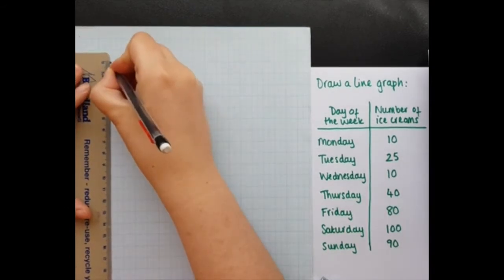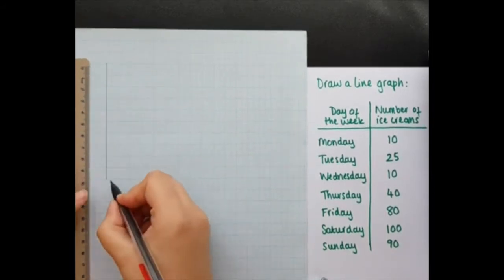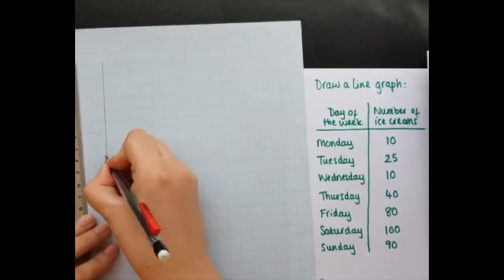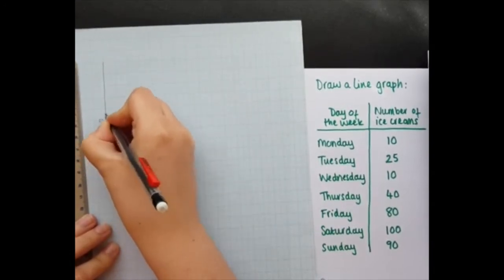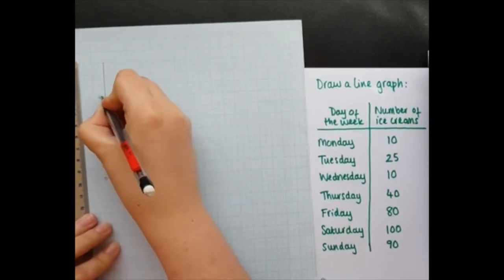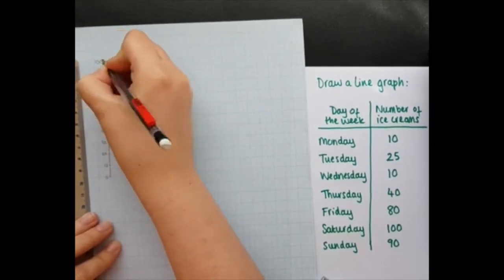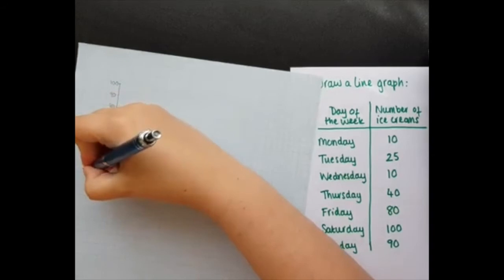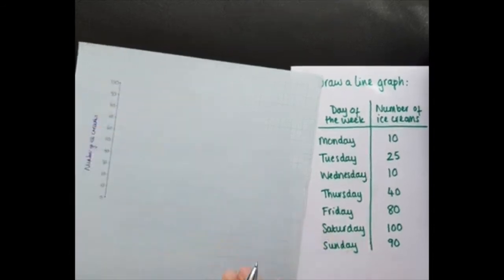So we're going to start up here and we're going to go down to 10 with each of these boxes being 10. So 0, 10, 20, 30, 40, 50, 60, 70, 80, 90, and 100. There we go. And I'm going to label that axis with number of ice creams.